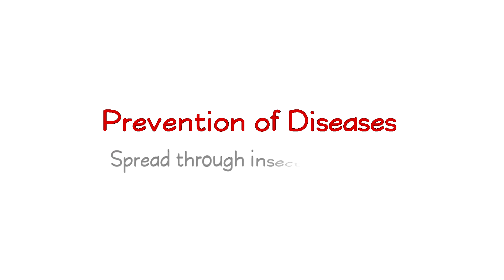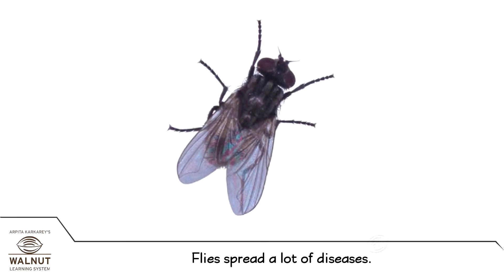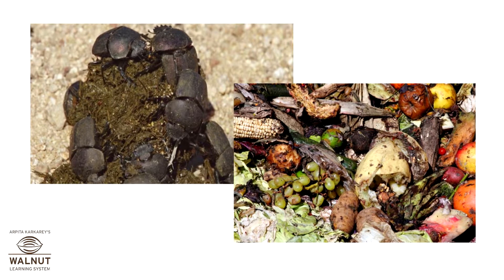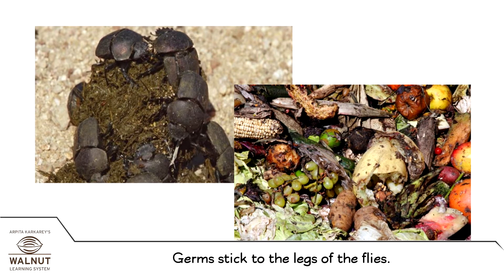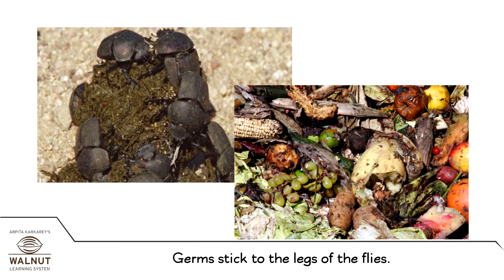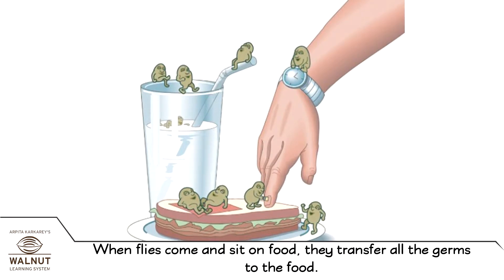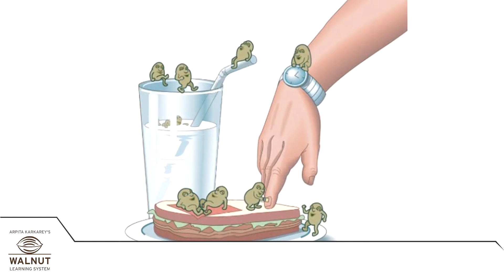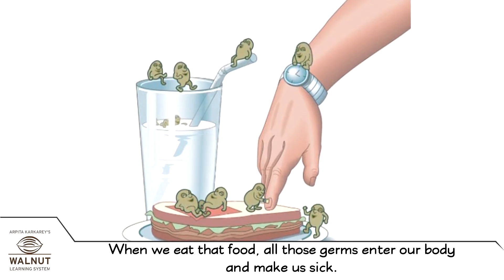Prevention of diseases spread through insects and dust. Flies spread a lot of diseases. They sit on all possible dirty things like dung, rotting stuff, and garbage. The germs on all these things stick to their legs. Then they come and sit on food and transfer all the germs to the food. And when we eat that food, all those germs enter our body and make us sick.